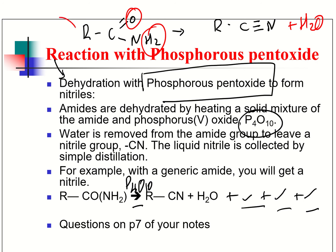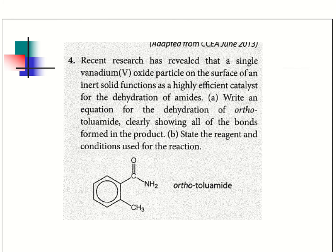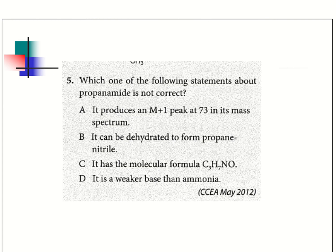If they give you a particular amide, you'd have to work out the nitrile that forms and write the equation. Likewise, if they give you the nitrile, you'd be asked to backtrack and work out the formula of the original amide. There are some questions in your notes to have a go at, and also exercise 5.10f on page 226.